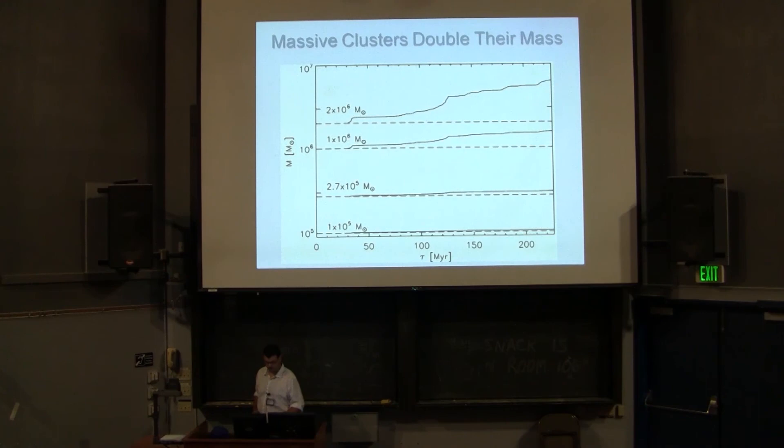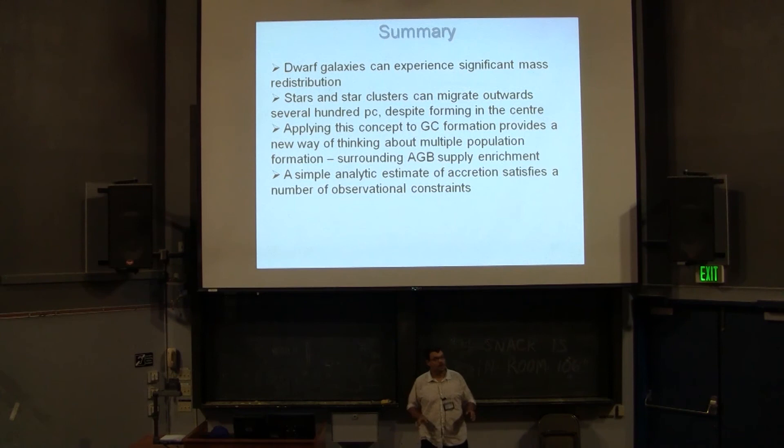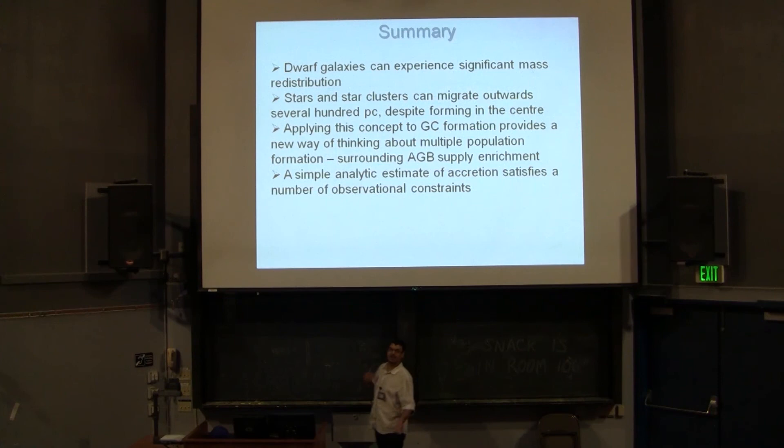My whole point is I'm not trying to focus on the simulation aspect itself — I'm not here to say my code is better than theirs. I'm starting with: let's say we can form cores in dwarf galaxies — what can they do? And they can do a lot of cool stuff. Thank you very much.